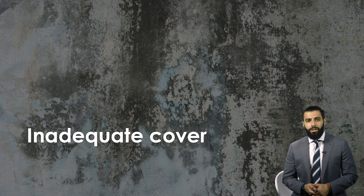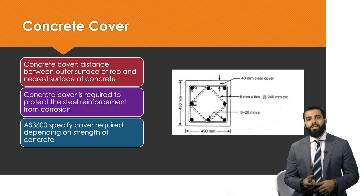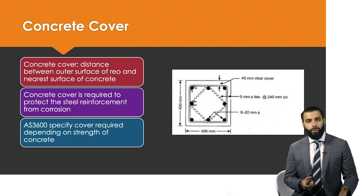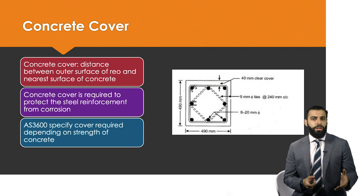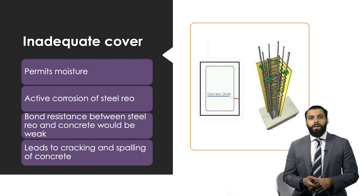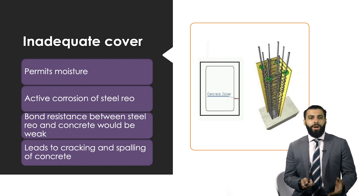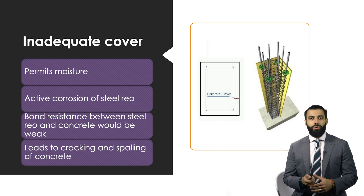Inadequate cover is another common construction defect, where the steel reinforcement embedded in your concrete members does not have sufficient space between it and the surface of the concrete. This leads to increased chemical attacks — it's easier for chloride ions to penetrate and reach the steel reinforcement, causing corrosion. AS3600, the Australian concrete standard, specifies what the cover distance should be between the reinforcement and the concrete surface, depending on the compressive strength of the concrete. With inadequate cover, moisture penetration is increased, resulting in excessive cracking and spalling due to corrosion.